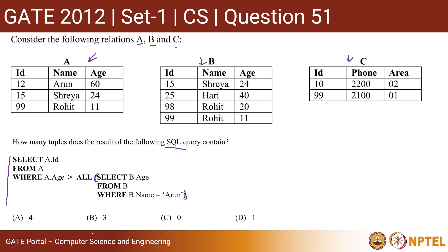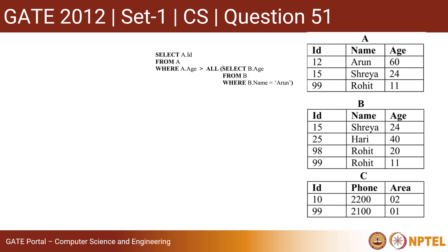These are the options. You have to find out what should be the number of rows or number of tuples in the result of the SQL query. We need to start with the subquery. We'll first find out how many rows and what are the rows returned by this subquery part.